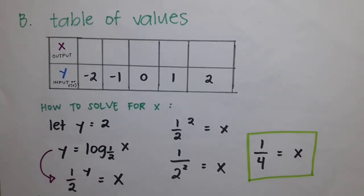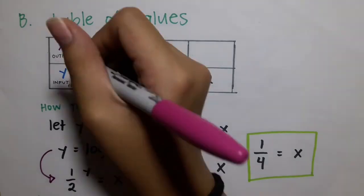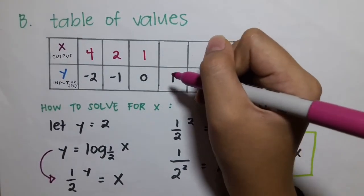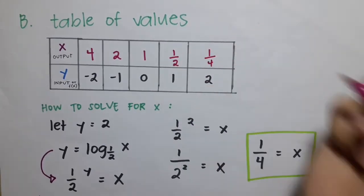Exponential rules and laws are also followed to solve the x value for the logarithmic function. Our final answer is 1/4 is equal to x. Put it into the input or the x. And then, continue solving for the rest of the values given in the y.